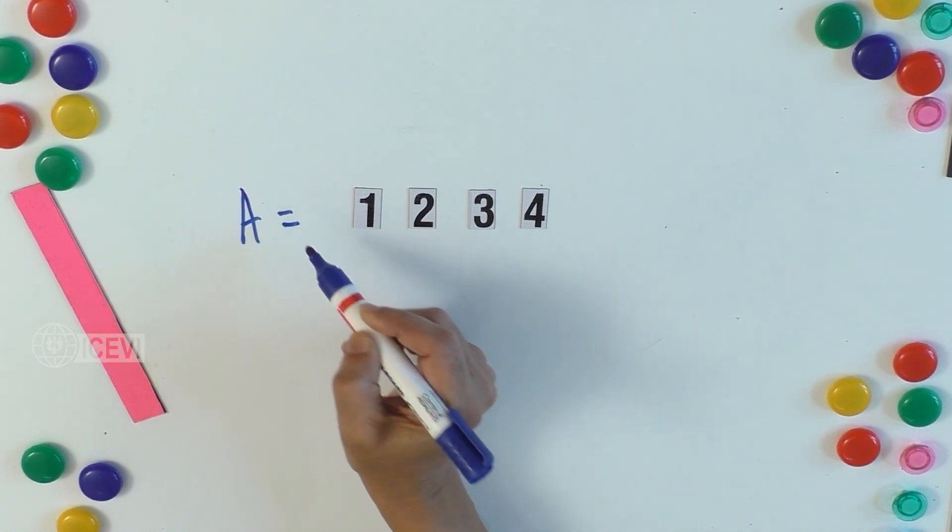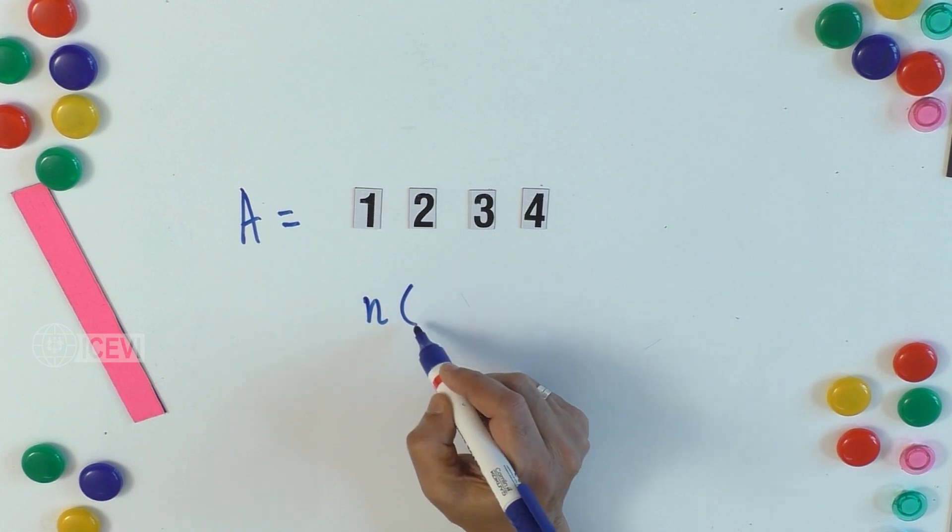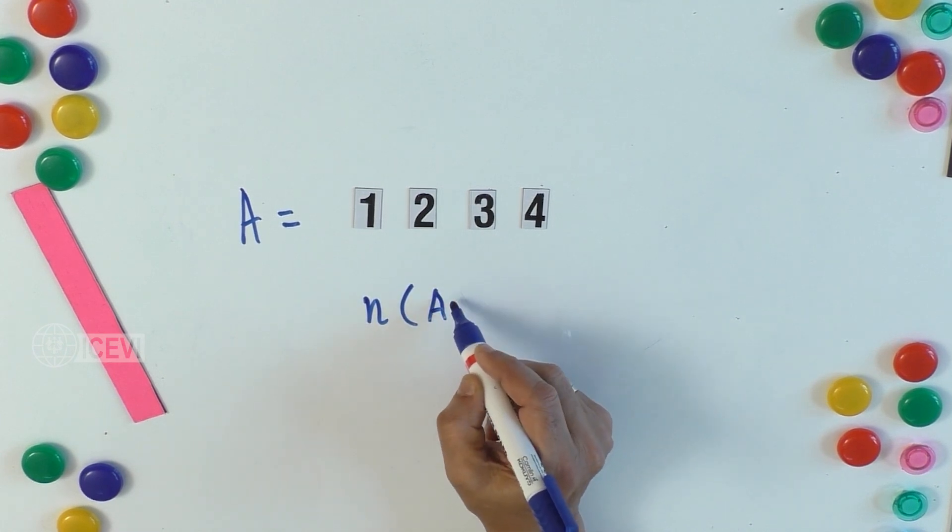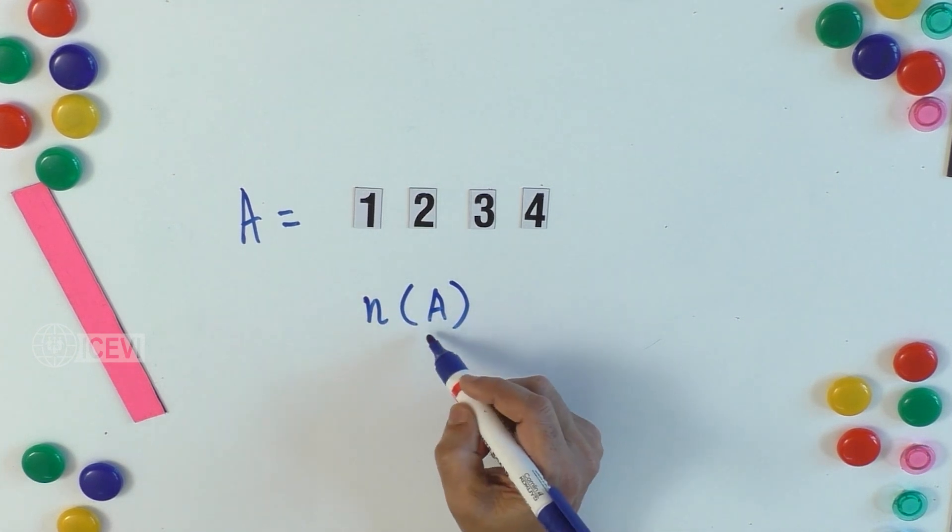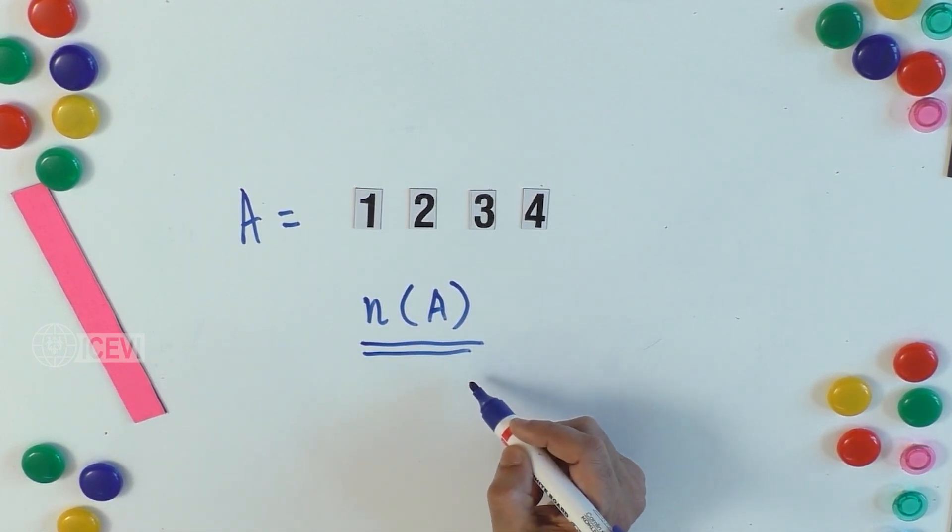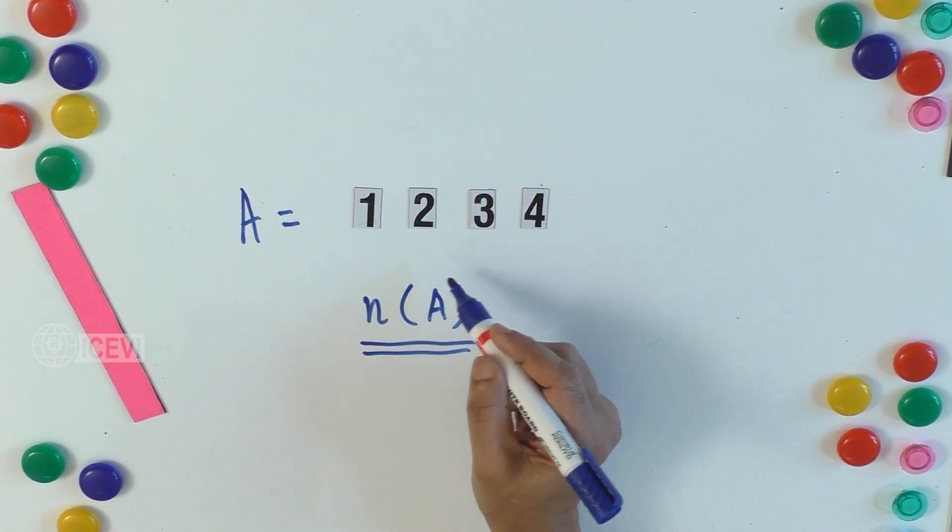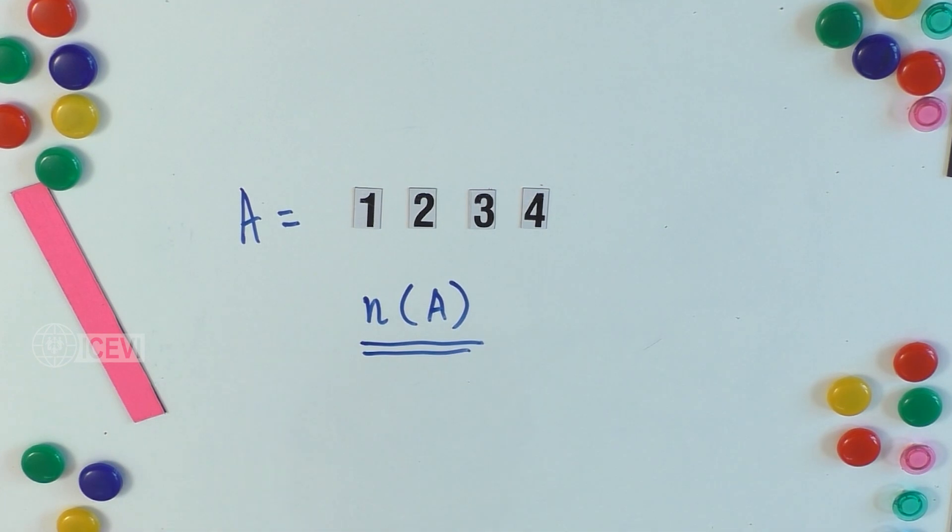If we call this set as A, then the cardinal number is indicated by n(A)—n, open parenthesis, A, close parenthesis. This can be indicated in the Braille form too, but it is necessary to teach this notation to the child.